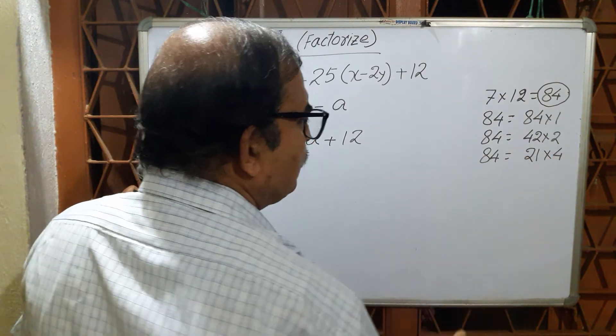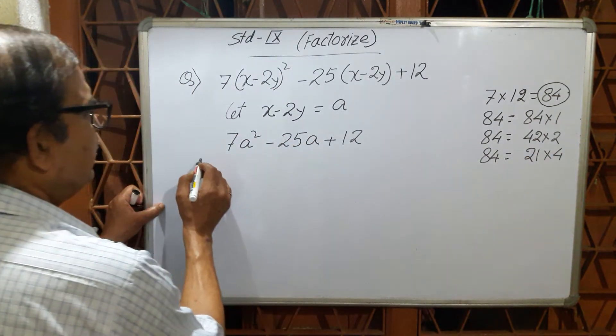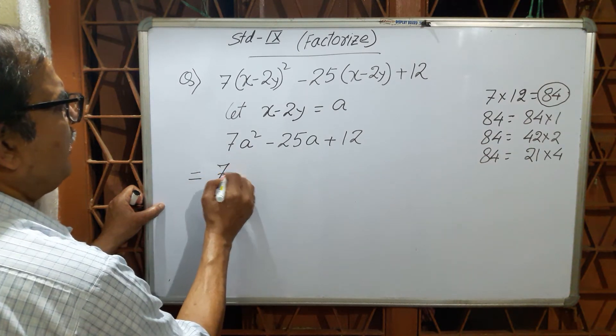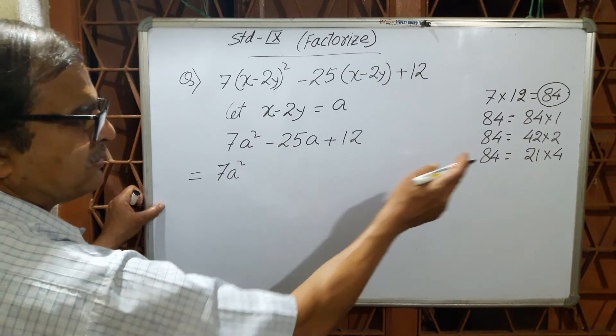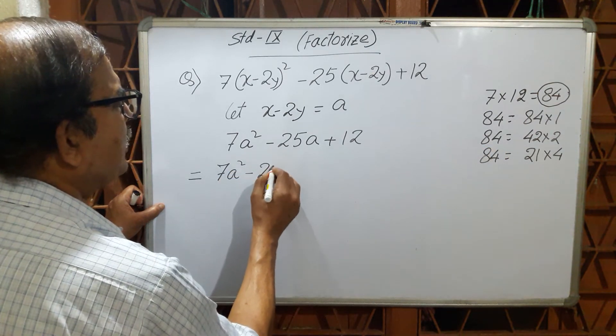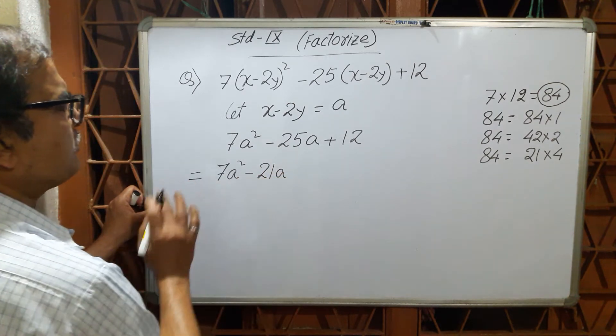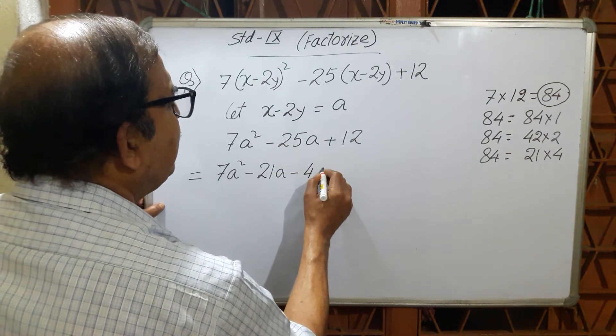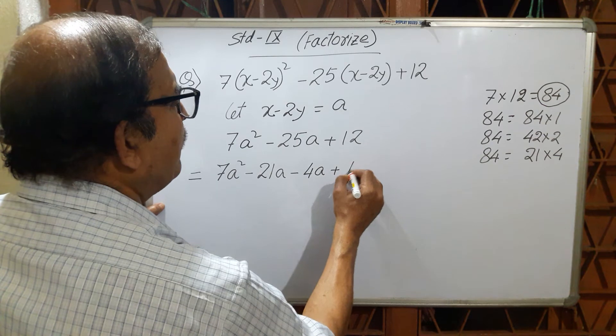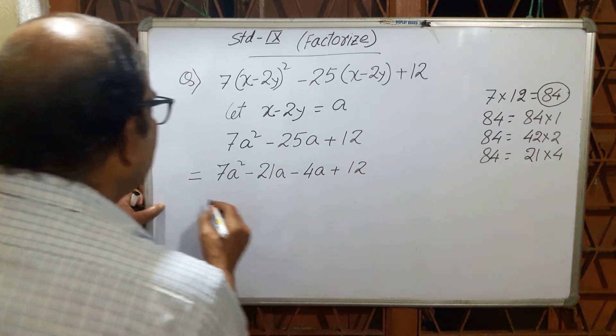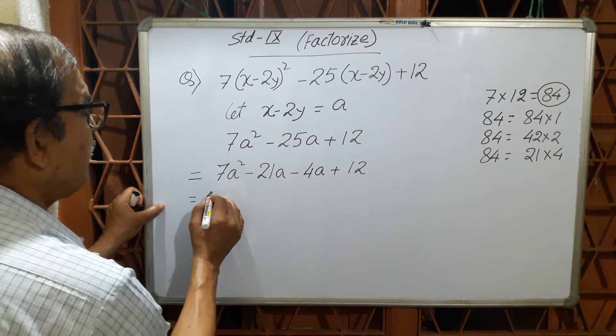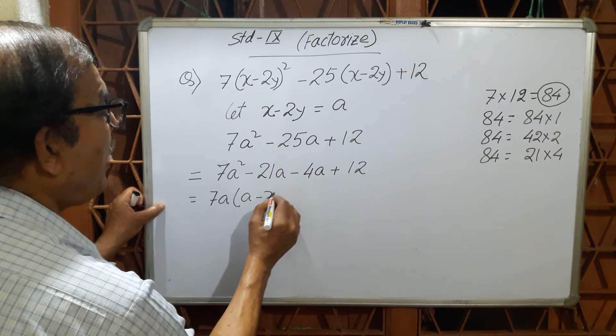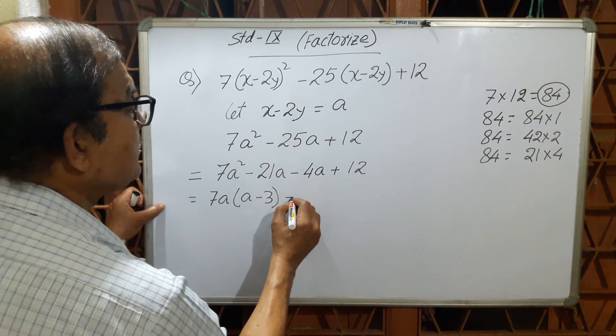Here is minus sign, then apply. That is 7a² minus 21a, because 21 is the multiple of 7. You have to set in such a way which is easy to comment. Then minus 4a and this is plus 12. Now you take here 7a as a common, then what is coming: a minus 3. Again you take minus 4 as common.